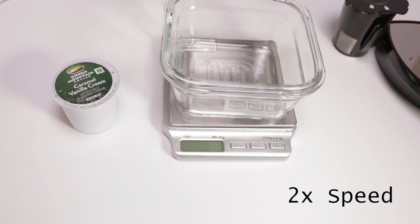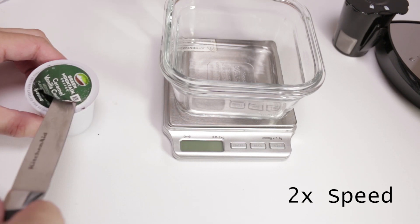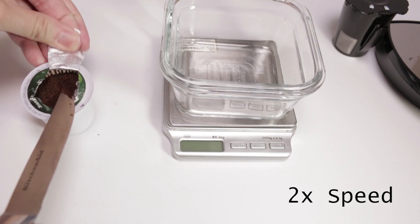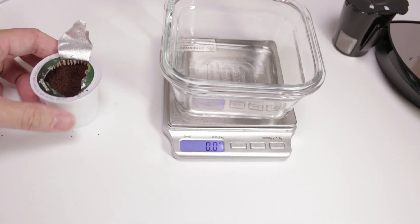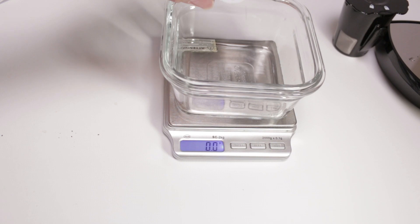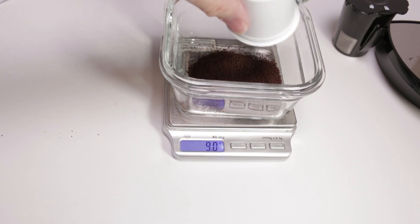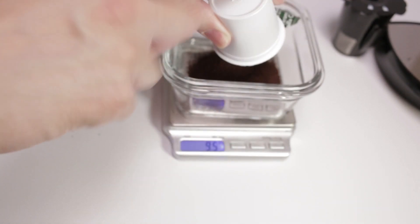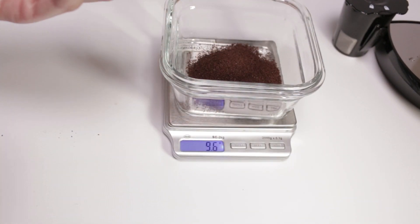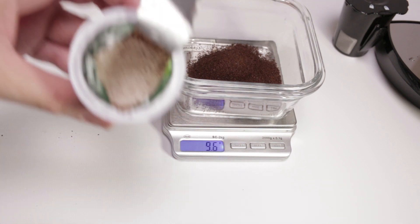So let's see how much coffee is in the regular size K-Cup. In the caramel vanilla, I found that it's 9.6 grams of coffee.